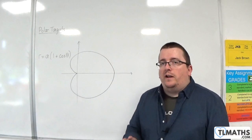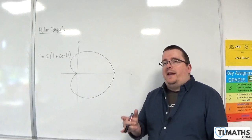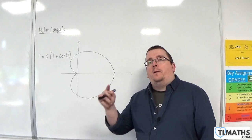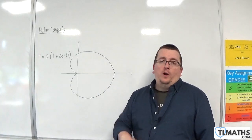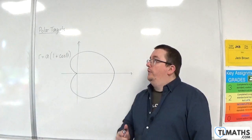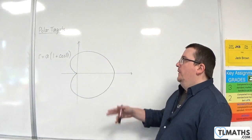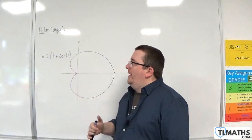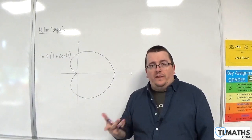In this series of videos, we're going to be taking a look at how we can find the tangents that are parallel or perpendicular to the initial line for a polar curve. Here is an example of a polar curve, and this has equation R equals A times 1 plus cosine theta.